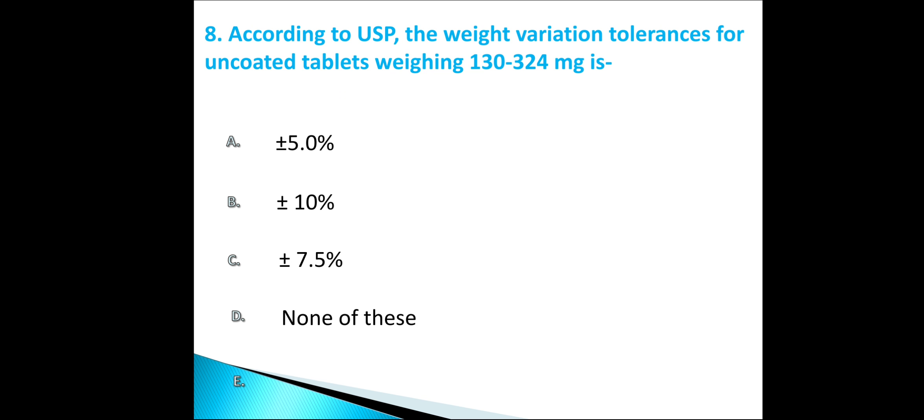Moving on to the next question. According to USP, that is United States Pharmacopeia, the weight variation tolerance for uncoated tablets weighing 130 to 324 mg is: plus minus 5%, plus minus 10%, plus minus 7.5%, none of these. We know that according to USP, if the tablet weight is below 130 mg, then the weight variation tolerance is plus minus 10%. If the tablet weight is more than 324 mg, then the weight variation tolerance is plus minus 5%. And if the tablet weight is in between 130 to 324 mg, then the tolerance variation is plus minus 7.5%. So here option C is the correct answer for question number 8.